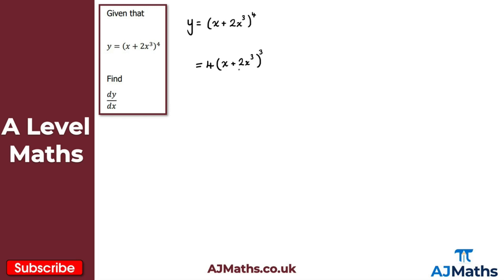To finish, multiply everything by the derivative of the inside of the bracket. Differentiating x + 2x³ with respect to x gives 1 + 6x². So dy/dx equals 4(x + 2x³)³ times (1 + 6x²). That's our solution, and as you can see, that method is a lot quicker. Once you've got enough practice, you'll prefer it — but if you're just starting, stick to finding dy/du and du/dx separately.